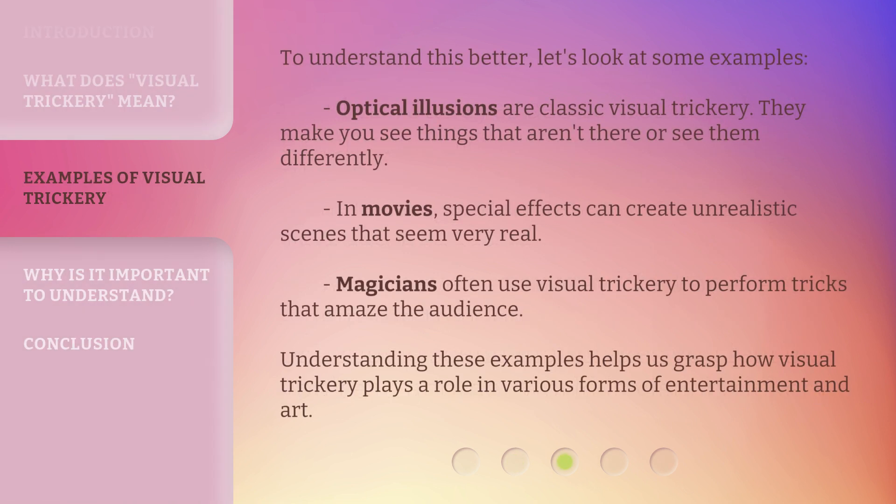To understand this better, let's look at some examples. Optical illusions are classic visual trickery — they make you see things that aren't there, or see them differently. In movies, special effects can create unrealistic scenes that seem very real. Magicians often use visual trickery to perform tricks that amaze the audience. Understanding these examples helps us grasp how visual trickery plays a role in various forms of entertainment and art.